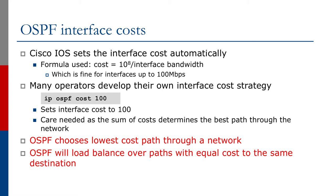To set a manual cost, it's a simple interface command: 'ip ospf cost <value>', which sets the metric on that interface to the specified value. Care is needed to ensure the sum of costs produces the best path through the network. OSPF chooses the lowest cost path and will load balance over paths with equal cost to the same destination.